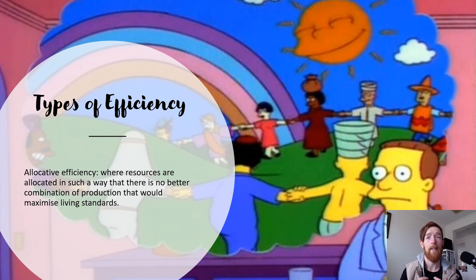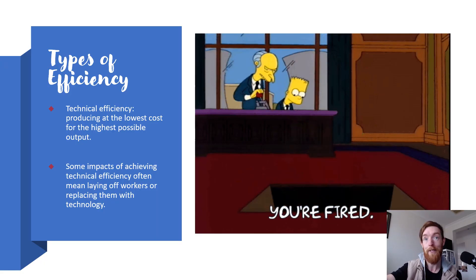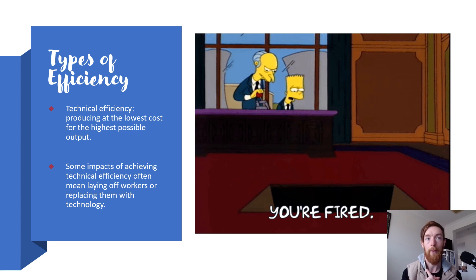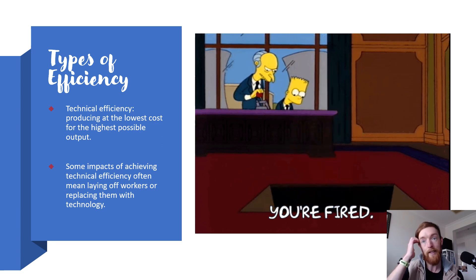Allocative efficiency is when the combination of goods and services best maximizes our living standards. And then a more common one — especially in Year 12 — is technical efficiency, which is producing at the lowest cost possible for the highest possible output, or using the least possible inputs for the maximum possible output. It's when you are cutting costs to maximize your profitability or maximize the overall amount you can produce with the least possible.